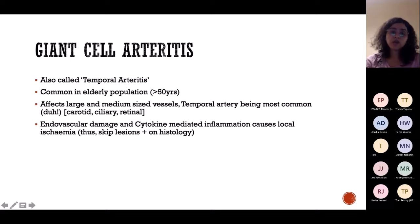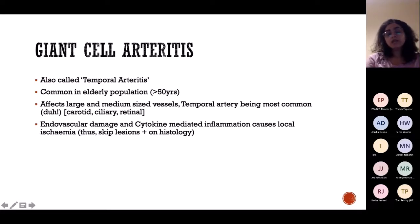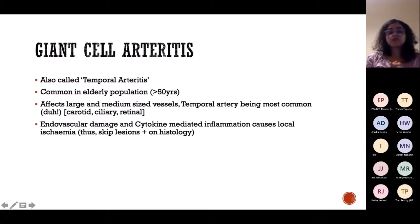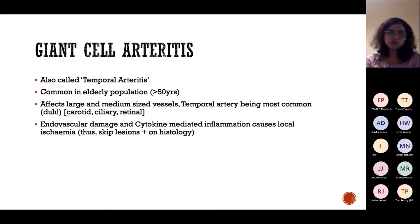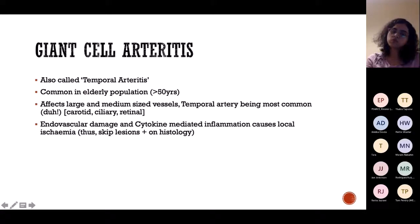Giant cell arteritis is also called temporal arteritis because it affects the temporal arteries. It is fairly common in the elderly female population. It most commonly affects the temporal artery; other arteries include carotid, ciliary, or retinal. Ciliary and retinal involvement are more common causes of blindness. The pathophysiology: think of the artery as a pipe with inflammation causing disrupted oxygen flow, leading to skip lesions and ultimately blindness due to ischaemia and cytokine-related inflammation.